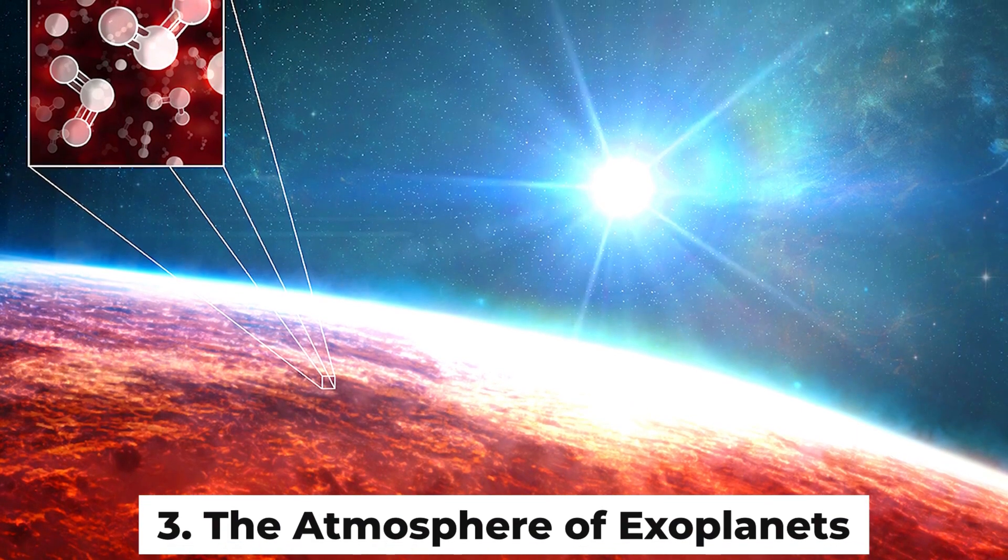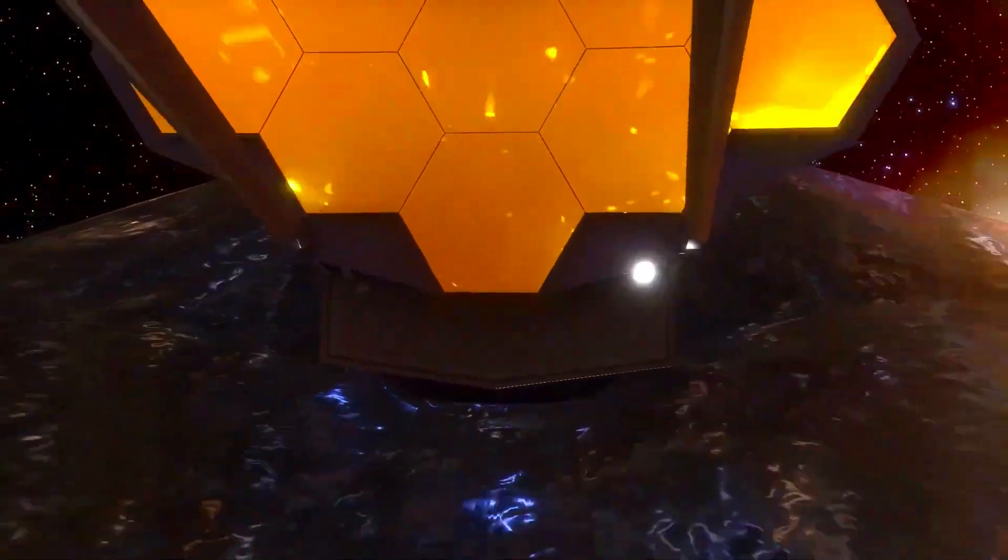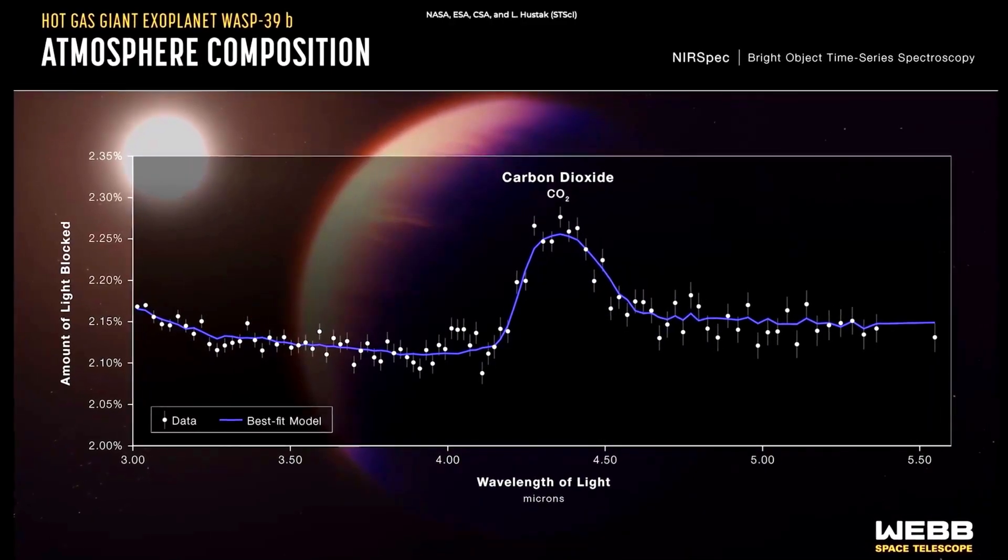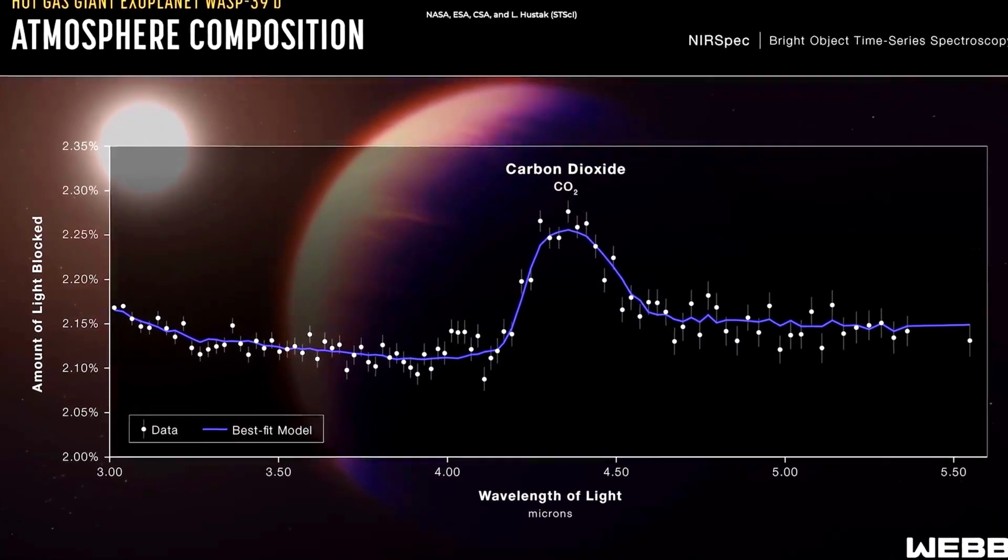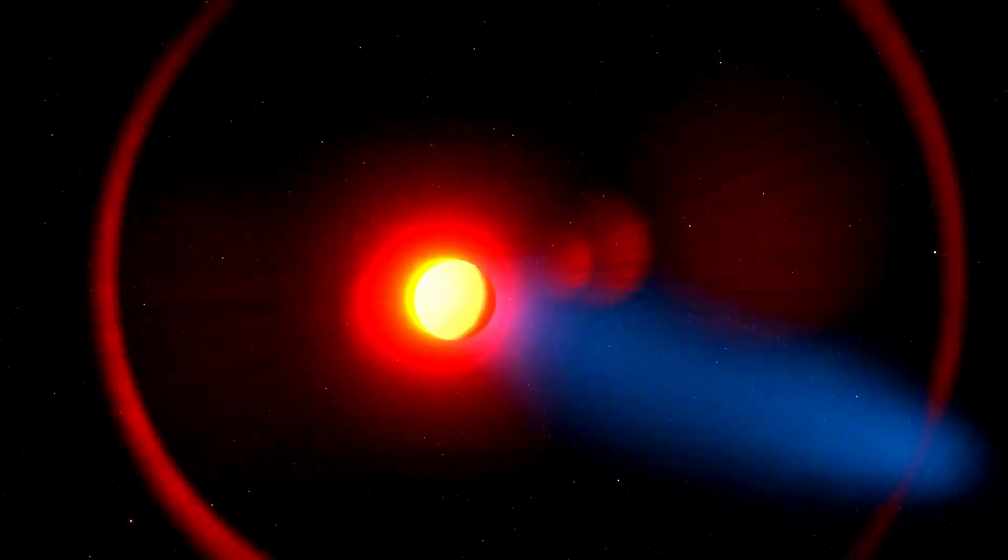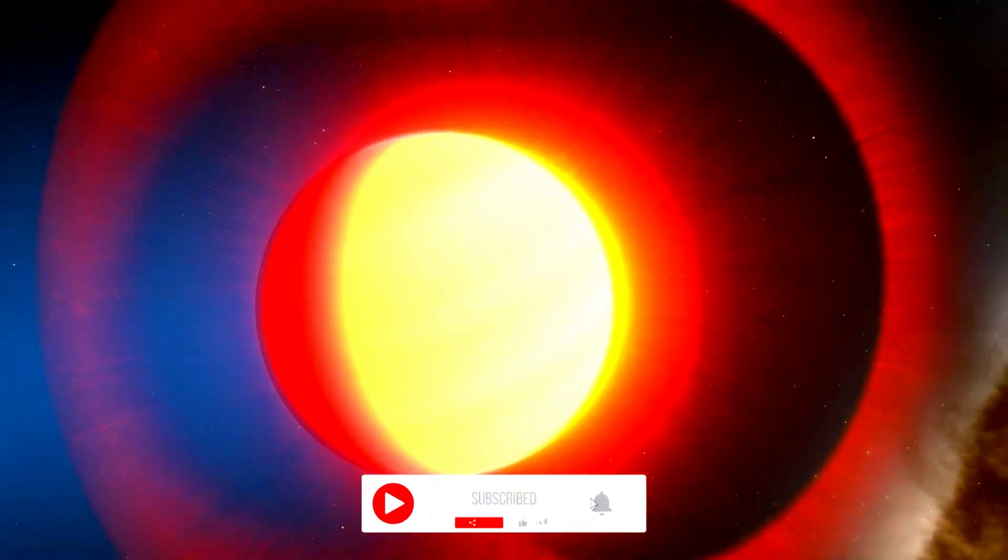The atmosphere of exoplanets—a breath of alien air: One of JWST's most tantalizing capabilities is its ability to study exoplanet atmospheres. It does this by observing the light from a star as a planet passes in front of it. The light filters through the planet's atmosphere, leaving spectral fingerprints of whatever gases are present.